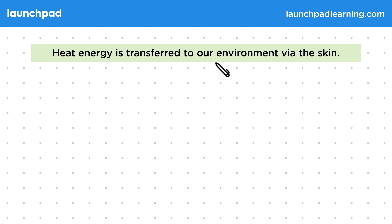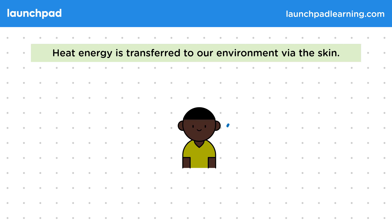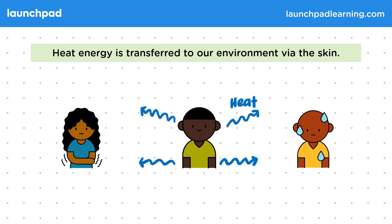Heat energy is transferred to our environment via the skin. Some heat is also lost in other ways, for example, via your lungs and excretions. Whether this loss is a good thing depends on whether you're hot or cold.